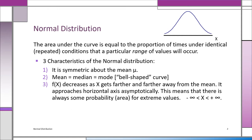Another way to understand this: if IQ is normally distributed with a mean of 100, you'll have very few people with IQs over 150 and very few with IQs below 50. The bulk is always going to be near the mean of 100.